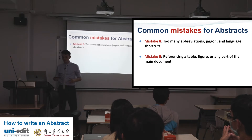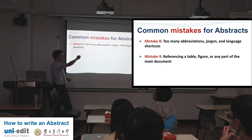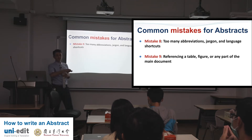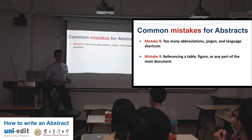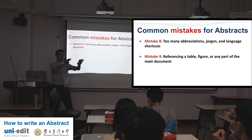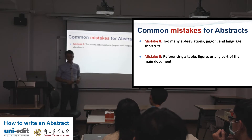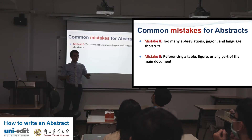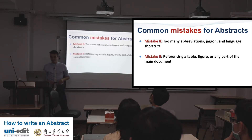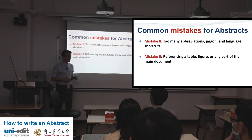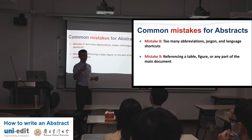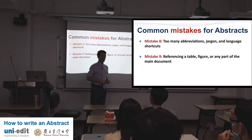Mistake eight: too many abbreviations, jargon, and language shortcuts — we've talked about this now three times. If you're using very difficult industry terms, that makes your abstract difficult to read. Everybody doesn't know what you know — when you write your paper, you're now the smartest person on your paper, so you need to use more generalizable keywords. Mistake nine: referencing a table, figure, or any part of the main document — 'Figure 2 shows.' No, don't do that in your abstract. That's for your paper, that's for your results section.